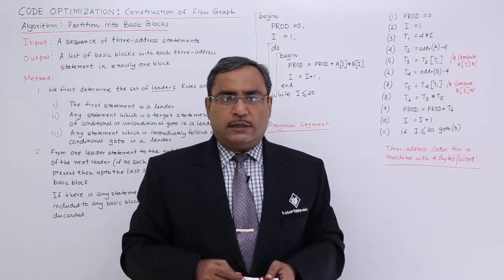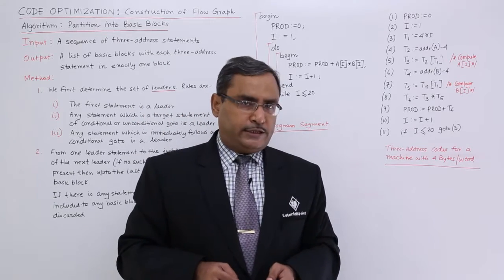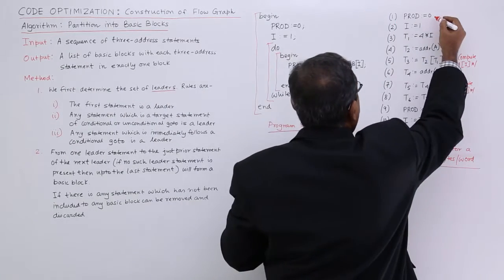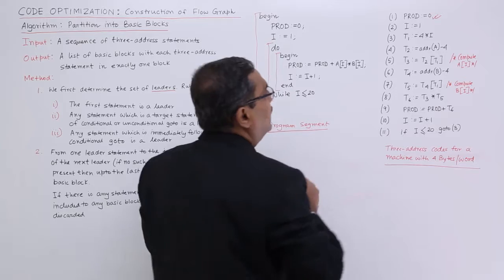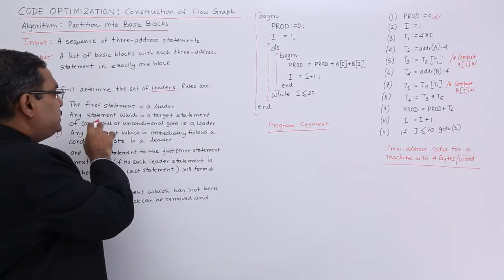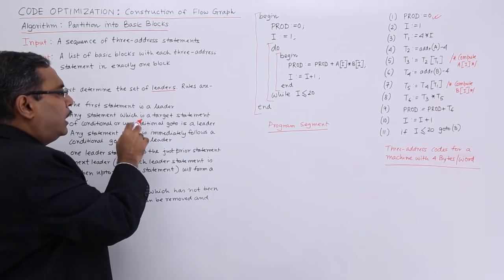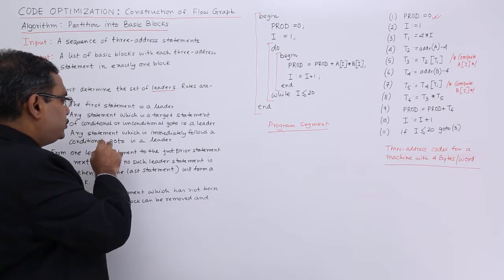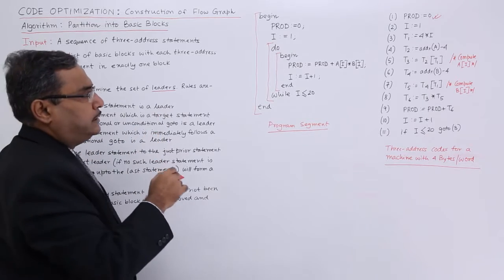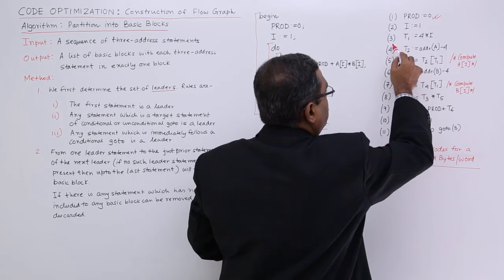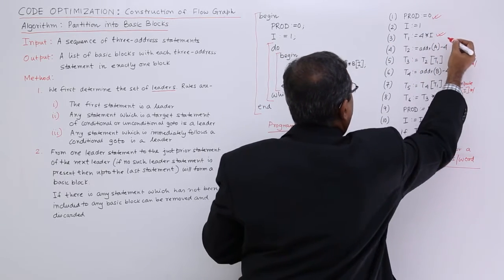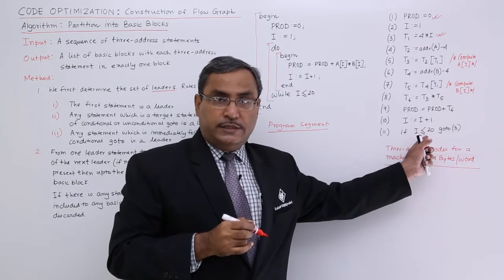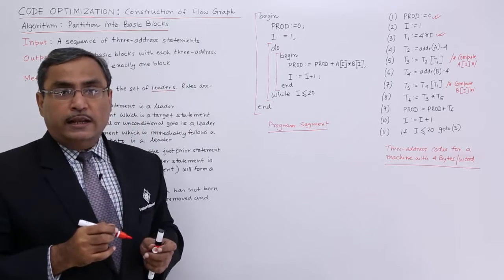Now let us go for leader detection. The first statement is always a leader. Next, any statement that is the target of a conditional or unconditional goto is a leader. Also, any statement that immediately follows a conditional goto is a leader — so there are three rules. Here, 'go to step 3' means statement number 3 is a leader, because it is the target of a conditional goto. So statement 3 is a leader.